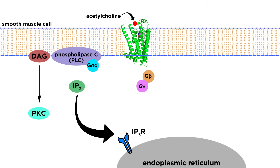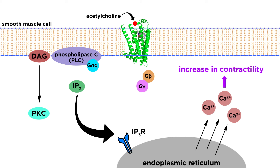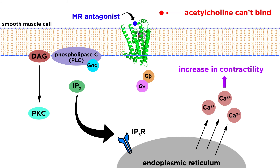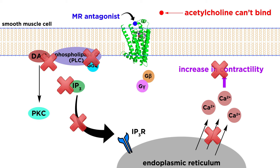IP3 binds to the IP3 receptor on the endoplasmic reticulum, and activation of this intracellular receptor liberates calcium ions from the stores possessed by the endoplasmic reticulum. Again, elevation of intracellular calcium ion concentration leads to an increase in smooth muscle cell contractility through calmodulin increasing myosin light chain kinase activity. With this signaling mechanism in mind, it can be appreciated that blocking acetylcholine from activating the M3 muscarinic receptor by antagonists reduces contractility and enhances the relaxation of airway smooth muscle cells.